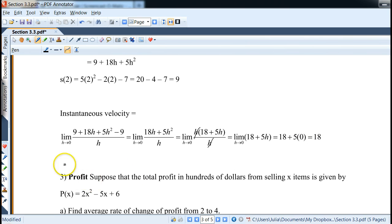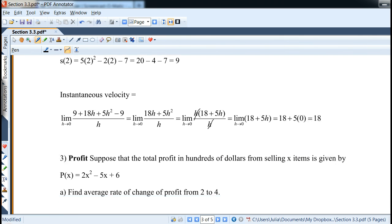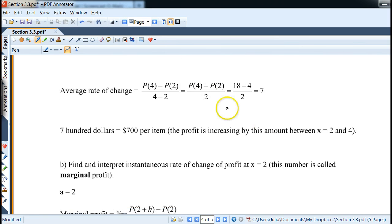Now next let's work on business application, which is profit, but it's very similar. So we're given the profit equation in hundreds of dollars from selling x items. Now we want to find average rate of change of profit from 2 to 4, and then average rate of change is similarly that we have defined before. So we do it as p(4) minus p(2) over 4 minus 2. So we calculate it, and we get 7 as the result. And that's, we call it $700, or I rewrote it as $700 per item, because it's per x value. So the profit is increasing by this amount between x equals 2 and 4. So it's definitely increasing because it's positive. And we've calculated rate of change, so that's why we know it's increasing.